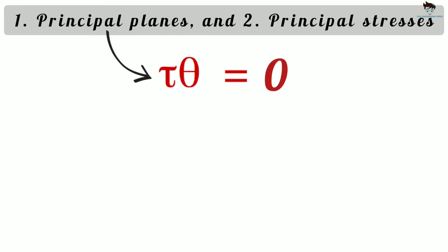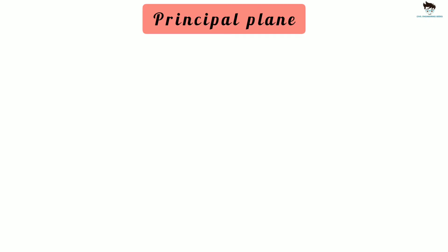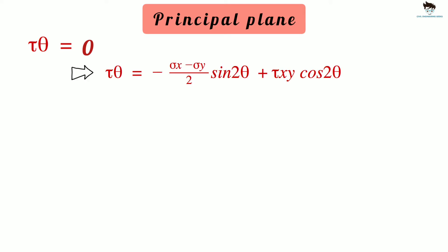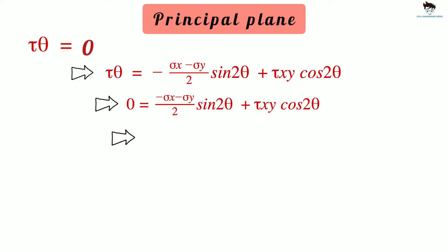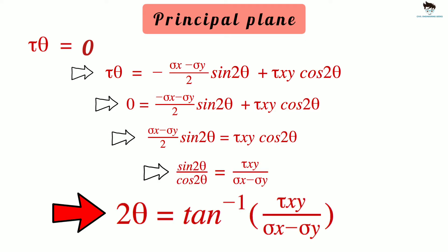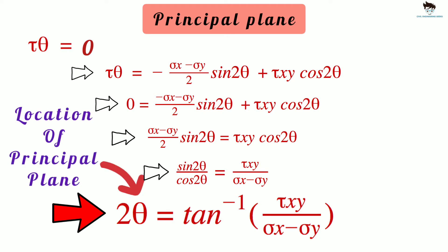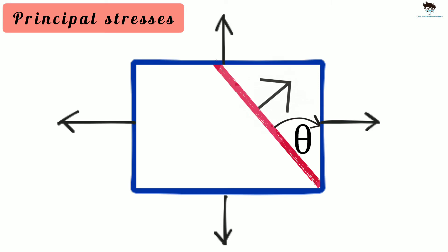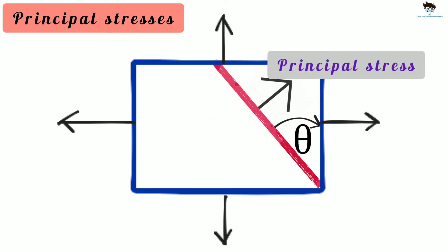The principal planes are the planes where the shear stress or tangential stress is zero. Therefore, to locate the principal plane, we can substitute zero to shear stress, that is tau theta, in the transformation equation. On simplifying the equation, we will get: 2θ = tan⁻¹(τxy / (σx − σy)). Here, theta is the location of the principal plane, and the normal stress corresponding to this theta is the principal stress.